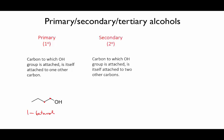A secondary alcohol has the OH group on a middle carbon. This means that if you look at the carbon to which the OH group is attached, it's attached to two other carbons. This is 3-pentanol, or pentan-3-ol, and that's an example of a secondary alcohol.